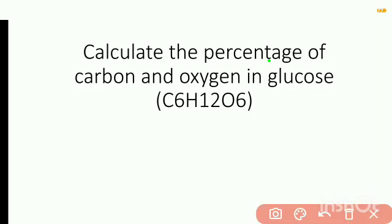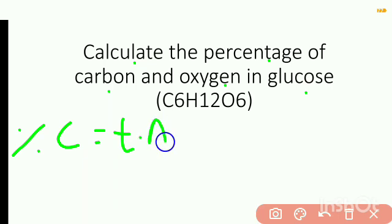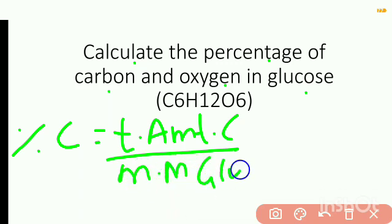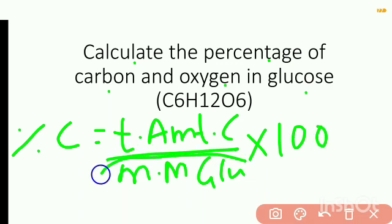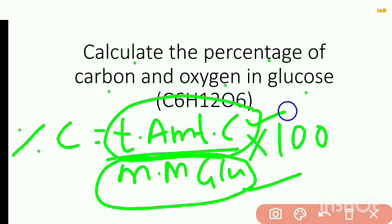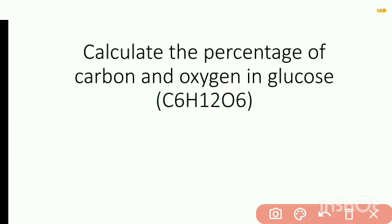To calculate the percentage of carbon and oxygen in glucose: to find out the percentage of anything, for example the percentage of carbon, the formula will be total amount of carbon divided by molecular mass of glucose, into 100. To find out the percentage of anything, first we need to find out the molecular mass of glucose, then we have to find out the total amount of that substance, either carbon or oxygen.